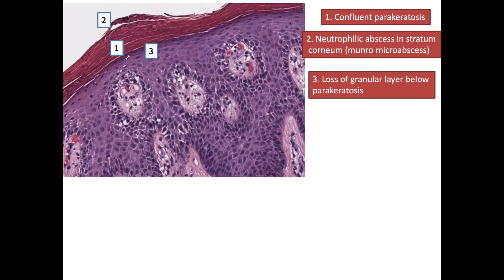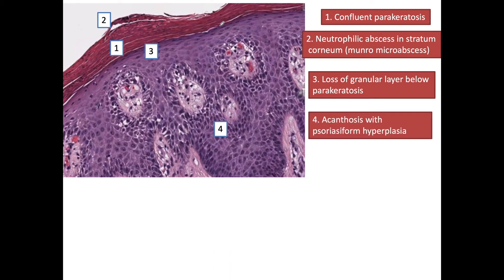The next change is loss of granular layer just below the parakeratosis — under the parakeratosis we see loss of the granular layer, but in the rest of the area the granular layer can be present. The fourth point is acanthosis with psoriasiform hyperplasia. Acanthosis is the thickening of the spinous layer in the epidermis, and psoriasiform hyperplasia is defined as elongated bulbous rete ridges.